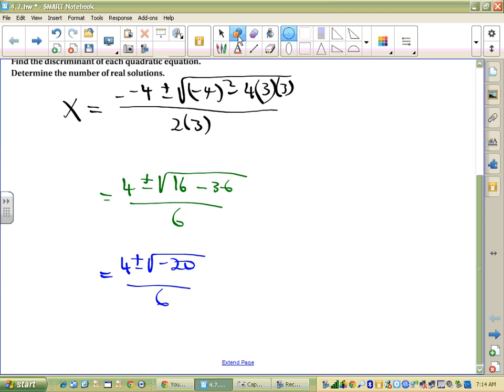So what you might notice here is that under the square root, you get negative 20, which tells us there's going to be two imaginary solutions. And on this one, really all you had to have done was just find that b squared minus 4ac, the stuff in the radicand, the stuff under the square root.